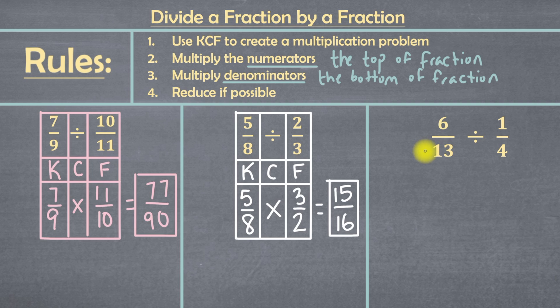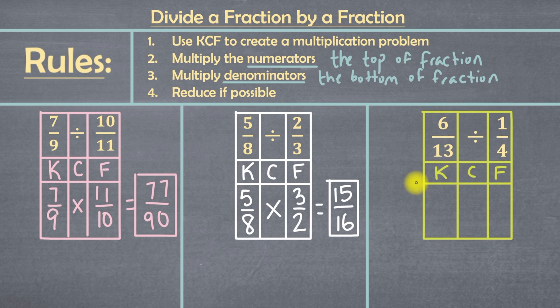So now, let's go on to our final example. 6 over 13 divided by 1 over 4. It doesn't matter how big or small the numbers are, as long as you stick with these four rules, you'll be absolutely fine. So rule number 1 is to use a KCF chart to turn this into a multiplication problem. So let's set that up. So let's start with our first column. We've got the fraction 6 over 13. Since it's in the K column, we're going to keep it exactly as it is.